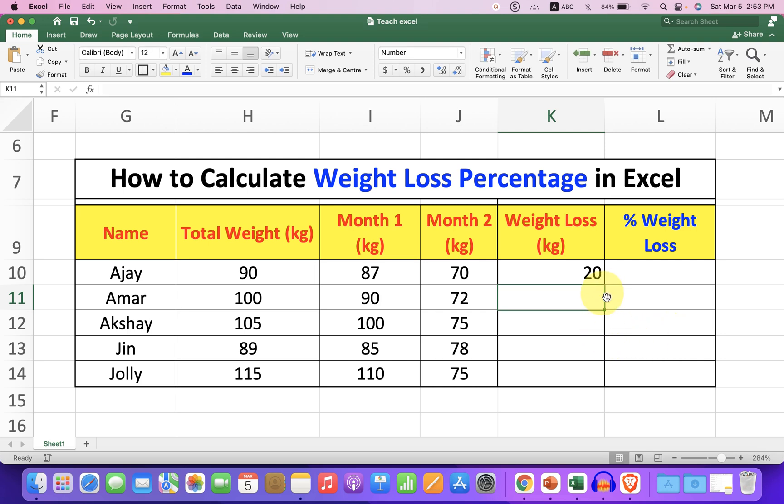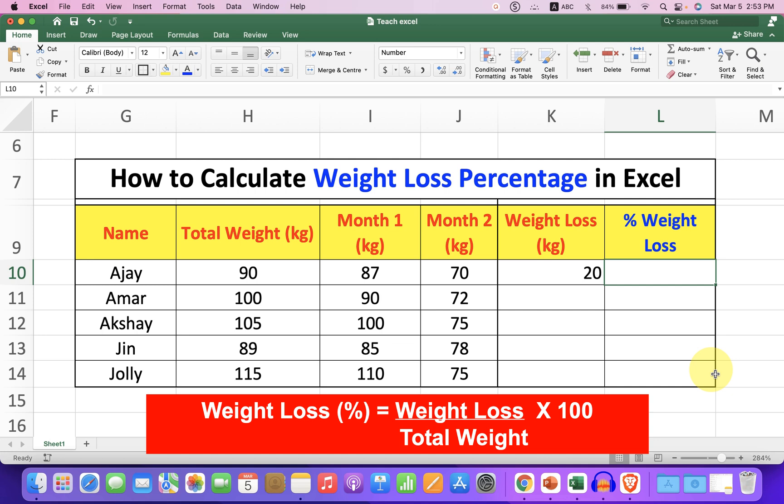So the weight loss was 20 kg in two months. To calculate the weight loss percentage, the formula is weight loss divided by total weight, multiply by 100.